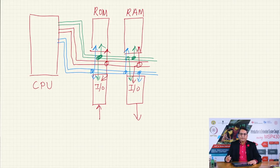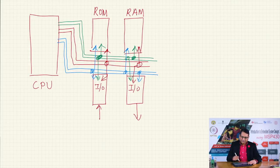So this is the block diagram of a computer: the CPU, ROM and RAM for memory, and input/output ports — all connected via the bus system.